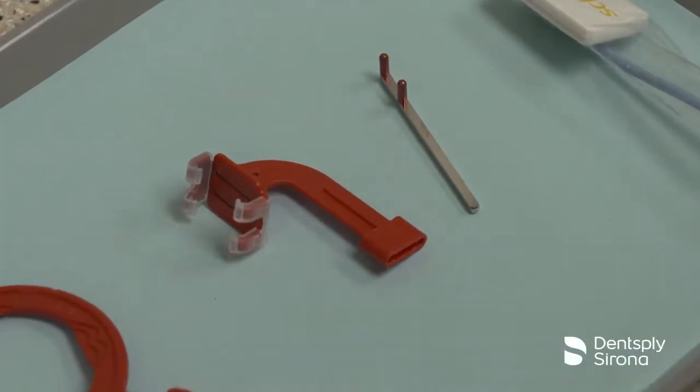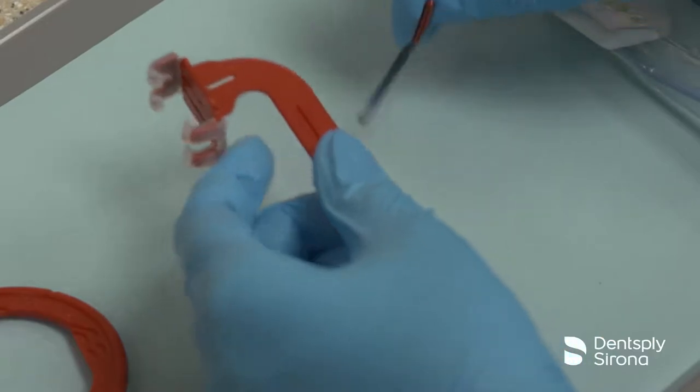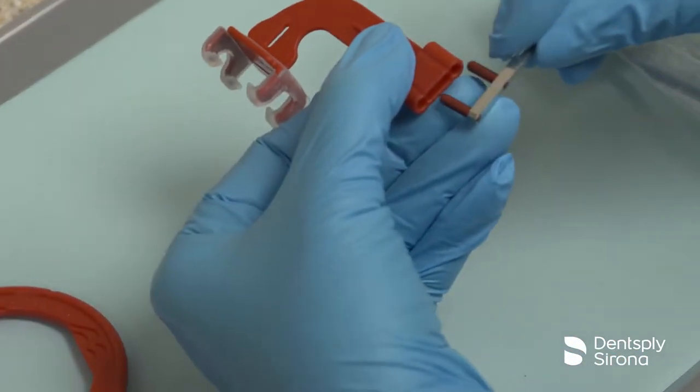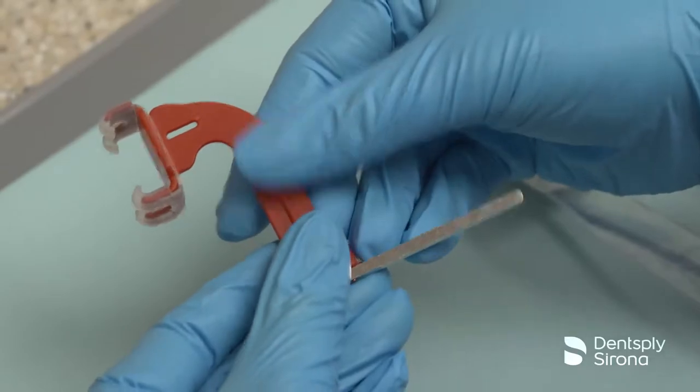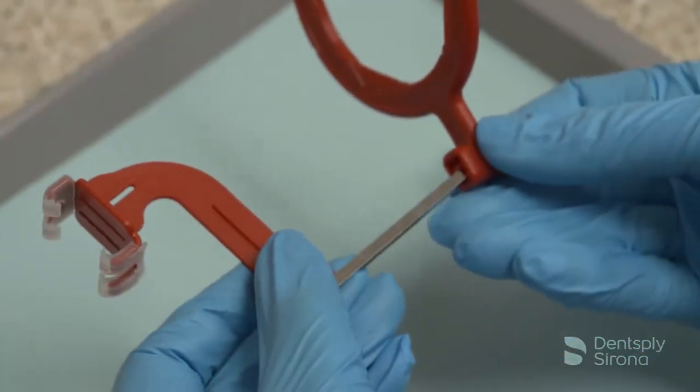To assemble the XCP short arm with the XCP DS-FIT bitewing bite block for images, place the red pins on the arm into the side of the red bite block and slide the arm into the red aiming ring.